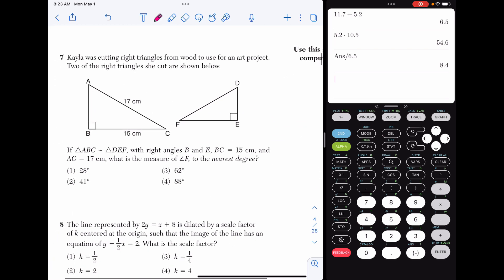Number 7. Kayla was cutting right triangles from wood to use for an art project. Two of them are shown below. If the triangles are similar, it gives us BC is 15, AC is 17. What is the measure of angle F to the nearest degree? The Regents has been using these questions a little bit more frequently in the last couple of years. When you're trying to find angle F, you're looking at that picture and you're like, well, I don't have any of the values, right? So the key is that whatever angle C is, angle F is going to be the same thing because those triangles are congruent to one another. So let's just find angle C.